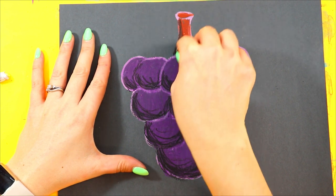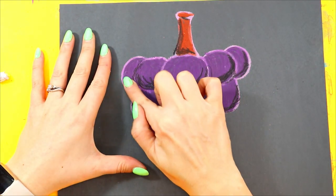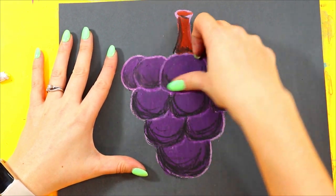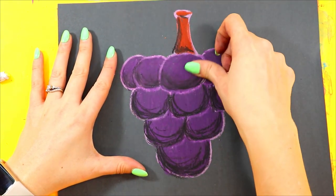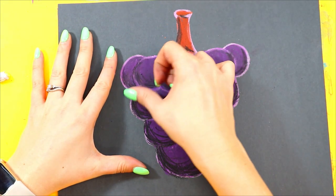And one side of my stem will be dark. Use your finger to blend it in. Look at that. Doesn't that look like paint? That is why oil pastels are so cool.